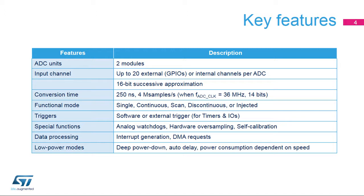In order to offload the CPU, the ADC has an analog watchdog for monitoring thresholds. The ADC also offers oversampling to extend the number of bits presented in the final conversion value. For power-sensitive applications, the ADC offers a number of low-power features.